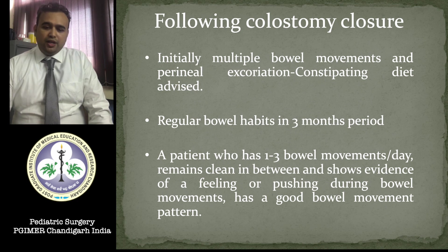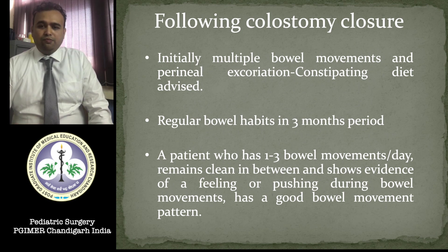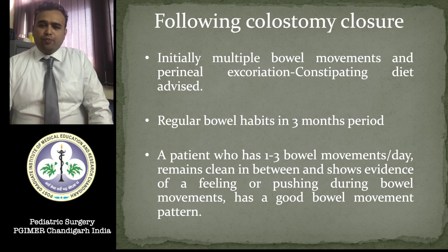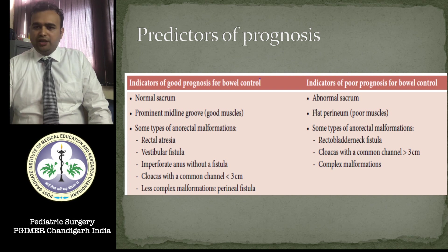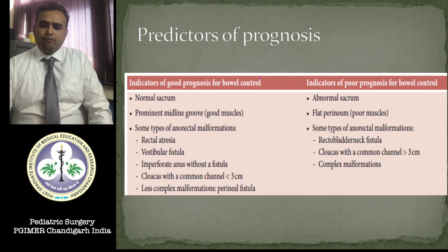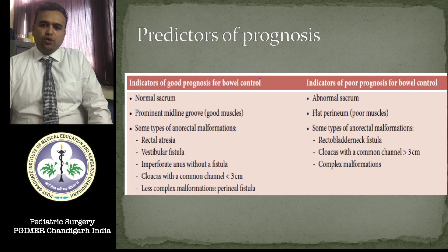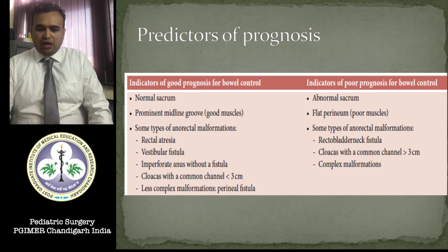After colostomy closure, patients initially have multiple bowel movements and perineal excoriation; a constipating diet is advised. Regular bowel habits take around three to six months. A patient having one to three bowel movements per day, who remains clean between movements and shows evidence of feeling or pushing during bowel movements, is known to have a good bowel pattern and can be trained well. Poor prognosis indicators include abnormal sacrum, flat perineum with poor muscles, high-type ARM especially bladder neck fistula, and complex malformations.